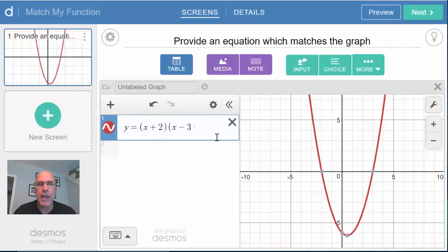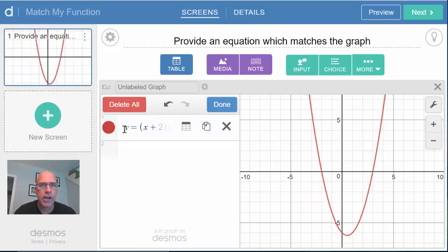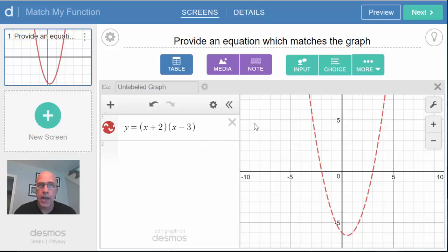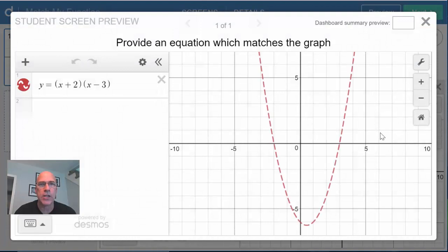And for students, I like to make the equation dotted, so I'm going to use the Edit List gear here. By clicking on the color, I can make it dotted. And right now, if I preview this, here's what it looks like, provide an equation which matches the graph. This is very easy for students because they can just see the equation right here. We're going to take care of that.